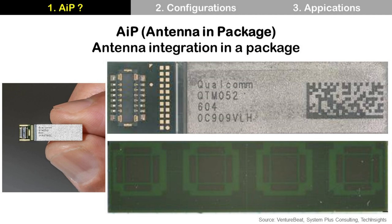This is an AIP module from Qualcomm in 2018, Generation 2 of QTM052. It is used in a 5G smartphone. From the image on the left, we can guess its actual size. The upper-right image is the top side of the AIP, and the lower-right image is the bottom side. AIP technology can reduce the size of a wireless system significantly by integrating the antenna in a package.